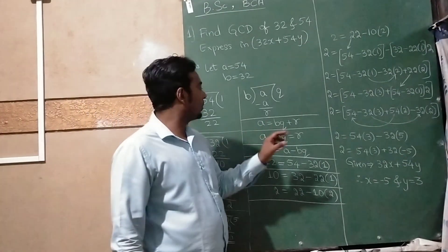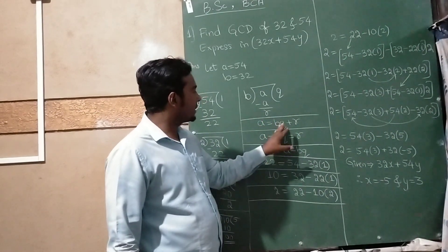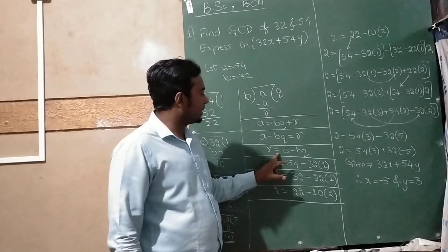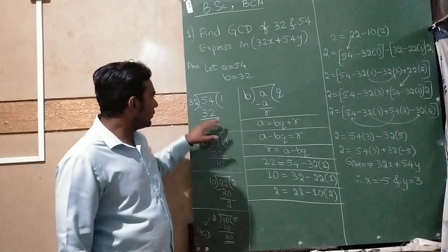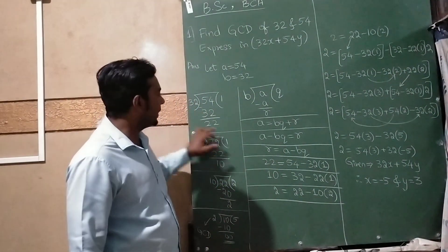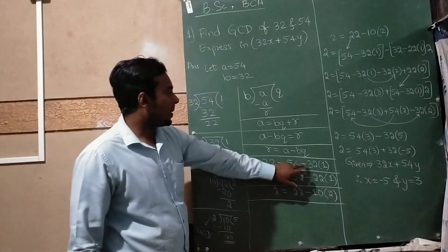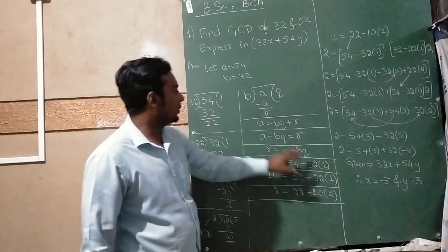The actual formula is a equals b times q plus r. Taking b times q to the LHS, it becomes r equals a minus b times q. The first remainder is 22 equals 54 minus 32 times 1.